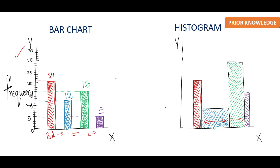To remember: a bar chart is like a KitKat chocolate bar. For a histogram, remember from the first letter H — the two vertical lines of the H are connected at the middle, just like how every bar in a histogram is connected to the next. Bars being connected is a key feature of a histogram, which you don't see in a bar chart.